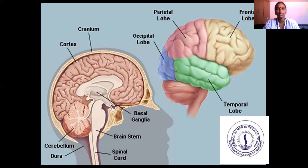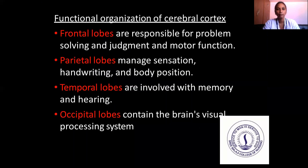This is the outer layer and cross-section of the brain. In the outer layer we can see the parietal lobe, frontal lobe, temporal lobe, and occipital lobe. In the cross-section of the brain, we can see the cranium, cortex, cerebellum, dura, spinal cord, brain stem, and basal ganglia.